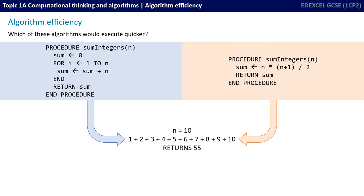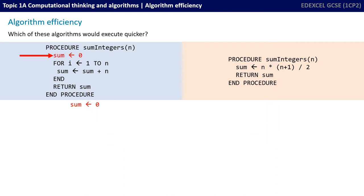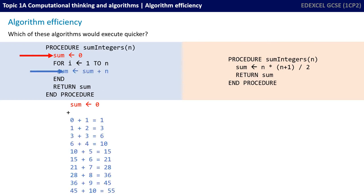So which one would execute quicker — in simple GCSE terms, which one is more efficient? If we take the algorithm on the left, there's a line of code assigning the value 0 to sum. Then we have a line that says sum becomes equal to the current value of sum plus n. If n is 10, this line of code executes 10 times — the first time 0 plus 1, the second time 1 plus 2, then 3 plus 3 — so there are 10 additional lines of code that need to be executed.